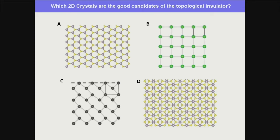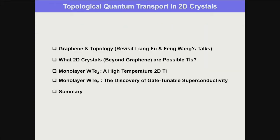Some kinds of hexagonal with different atoms, square, rectangle, more complicated patterns. In general, they are all very simple lattices with only one or two atoms. My talk will be the following way: I'll first summarize what Liang and Feng told us, organized in my own way, and try to convey what the criteria or intuition is to find a 2D topological insulator.